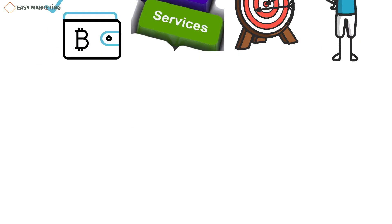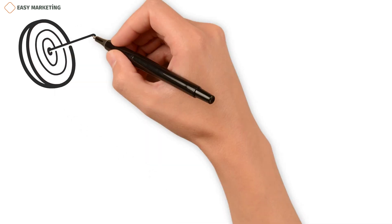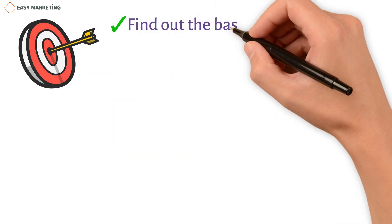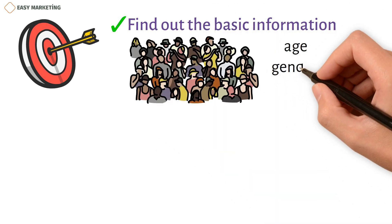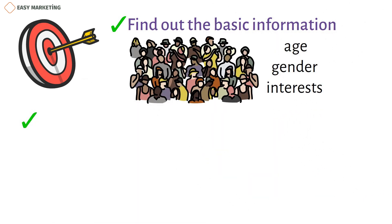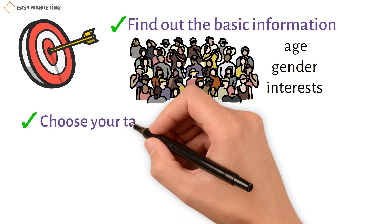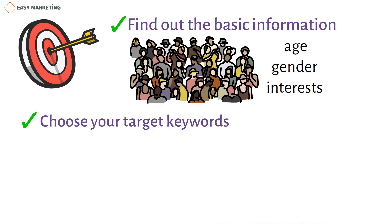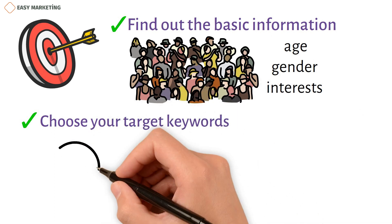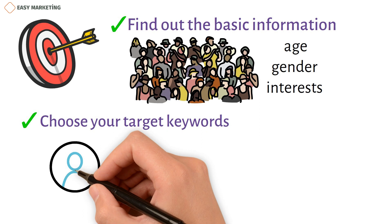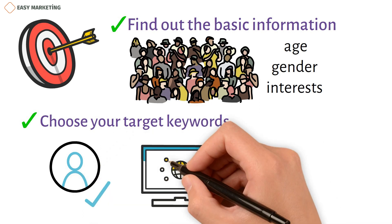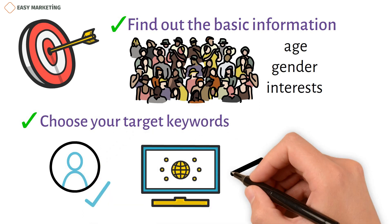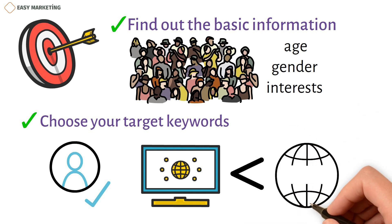Targeting with display advertising is a complicated process. Find out the basic demographic information about your target audience such as their age, gender, and interests. Choose your target keywords carefully so that you can get your product or service in front of the right people. The ad network will compare the terms you enter with those on the publisher's website where your ad will appear.